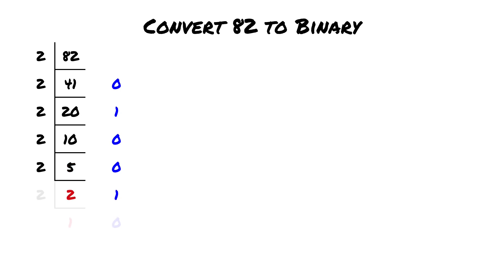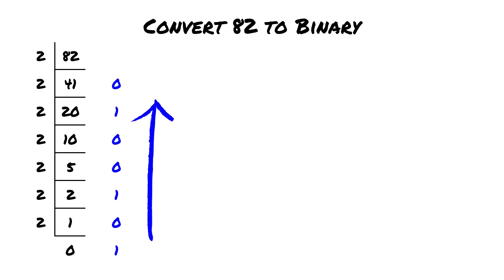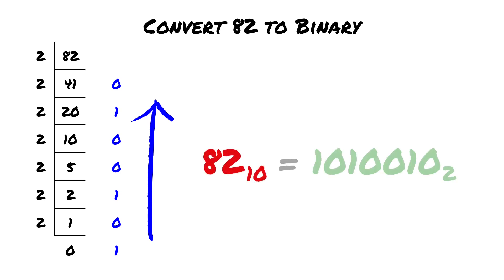2 divided by 2 is 1 remainder 0, and 1 divided by 2 is 0 remainder 1. Reading the remainders from bottom to top, the binary representation of 82 is 1010010.